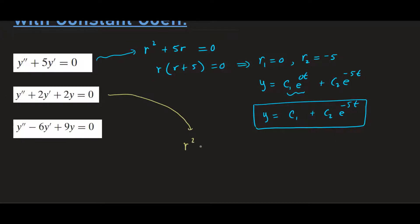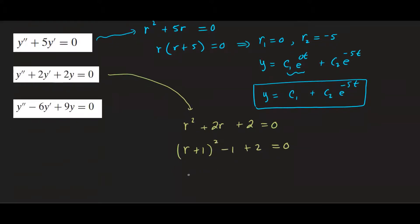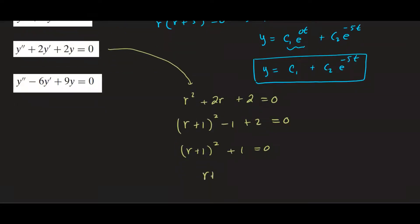That would be r squared plus 2r plus 2 equals zero. And this one I'm going to complete the square or feel free to use the quadratic formula. So we have r plus 1 squared minus 1 plus 2 equals zero by completing the square. And then this would simplify to r plus 1 squared plus 1 equals zero. And then we get r plus 1 squared equals negative 1.